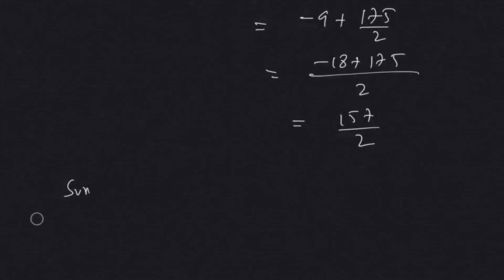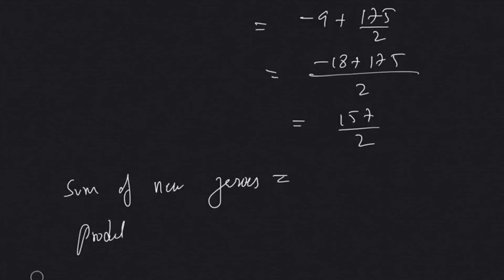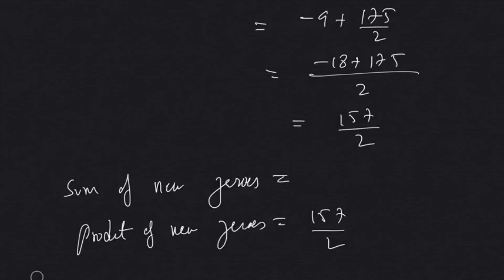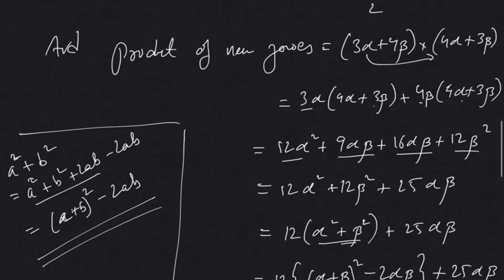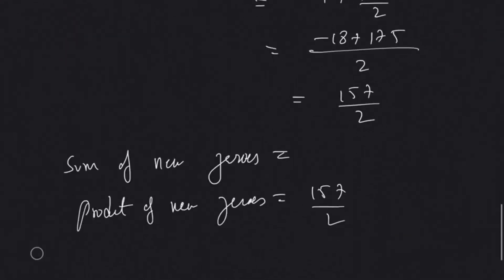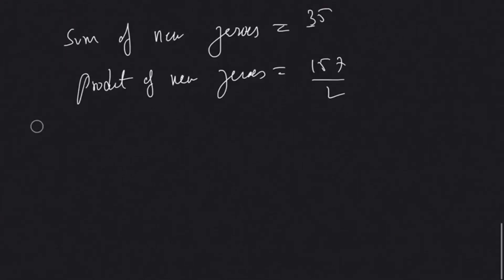So we now have the sum of new zeros as 35 by 2 and the product of new zeros as 157 by 2.